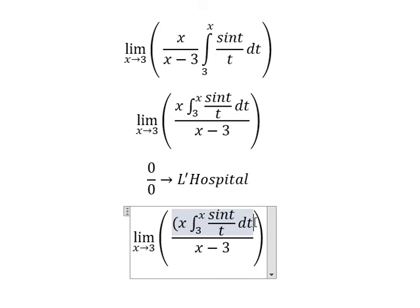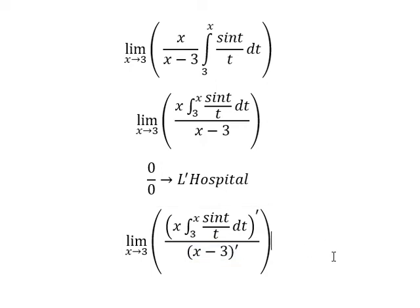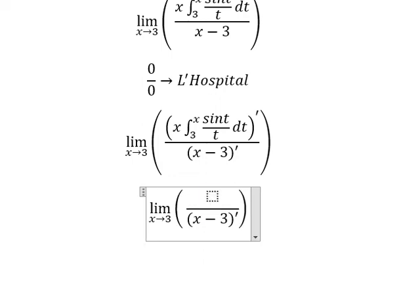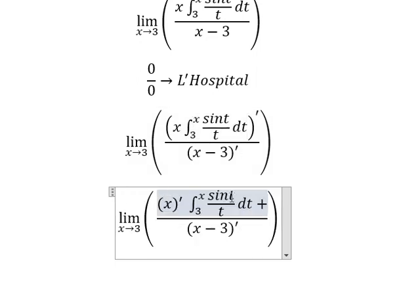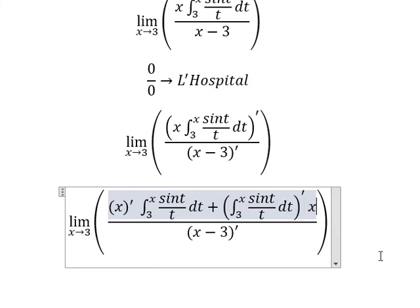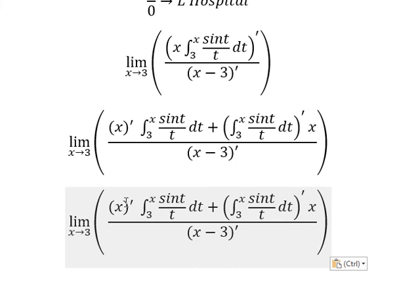Since we have zero over zero, we apply L'Hôpital's Rule. For the numerator, we apply the product rule of derivatives. We take the first derivative of X multiplied by the second part, then add the first derivative of the second part multiplied by X.